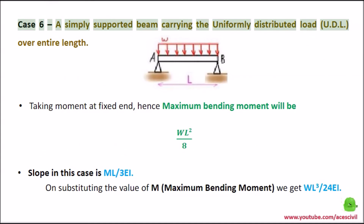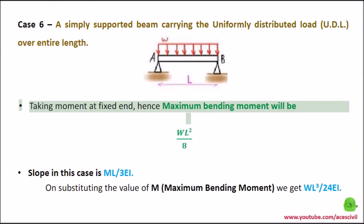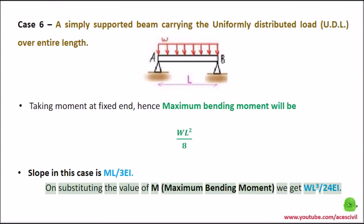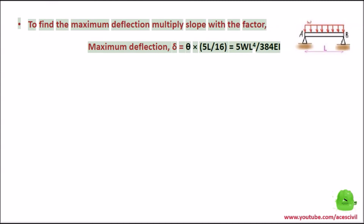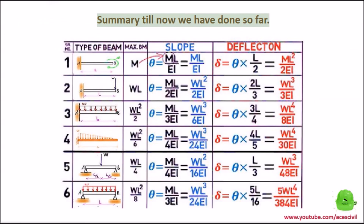Case 6: A simply supported beam carrying the uniformly distributed load (UDL) over its entire length. Taking moment at the center, the maximum bending moment will be WL² / 8. Slope in this case is ML / 3EI. On substituting the value of M (maximum bending moment), we get WL³ / 24EI. To find the maximum deflection, multiply slope with the factor: maximum deflection D = θ × (5L / 16) = 5WL⁴ / 384EI. This is a summary of all six cases covered so far.